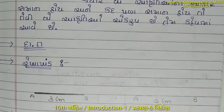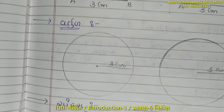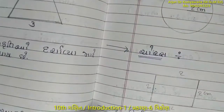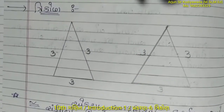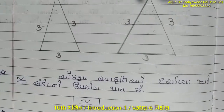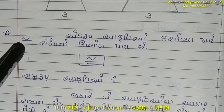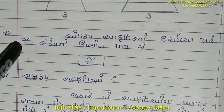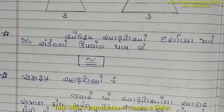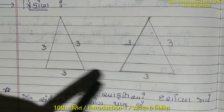એટલે જે આપણે એક રૂપ આકૃતિ છે એ કોને કહેવાય? જ્યારે બે આકૃતિઓ નો આકાર સમાન હોય અને કદ પણ સમાન હોય તો તેવી બે આકૃતિઓ એક રૂપ છે. દાખલા તરીકે: રેખા ખંડ નું ઉદાહરણ, વર્તુળ નું ઉદાહરણ, ચોરસ નું ઉદાહરણ - આ એક રૂપ આકૃતિઓ છે.